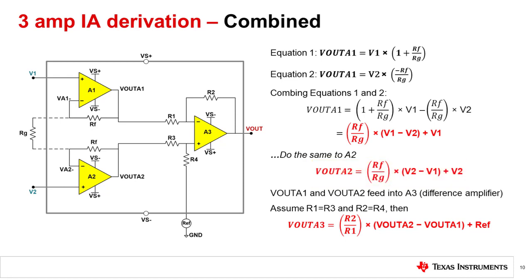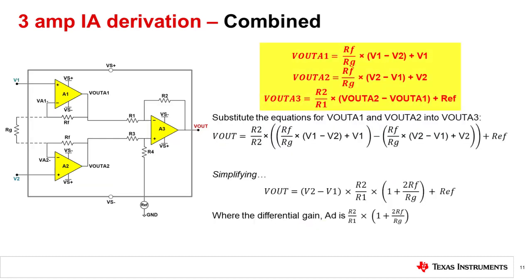The outputs of A1 and A2 feed into the difference amplifier A3. Assuming R1 matches R3 and R2 matches R4, the transfer function of A3 becomes R2 over R1 multiplied by Vout A2 minus Vout A1 plus reference. To recap, the output equation of each individual amplifier is here. If we substitute the equations for Vout A1 and Vout A2 into Vout A3, which is the output of the entire circuit, we get the following equation.